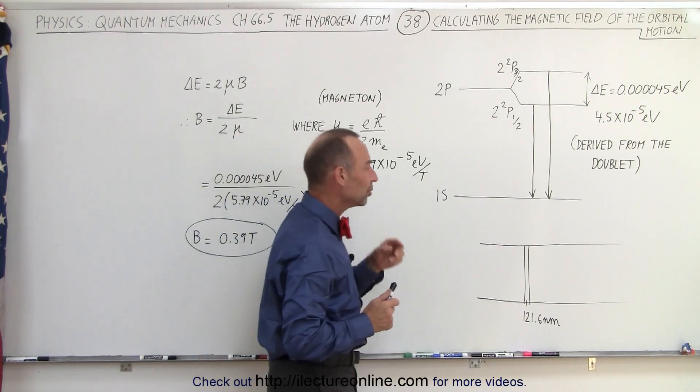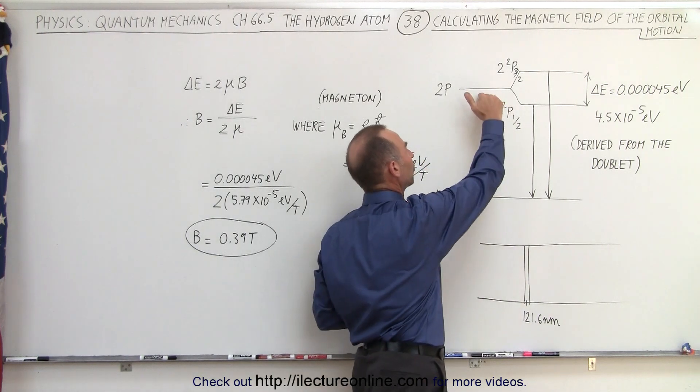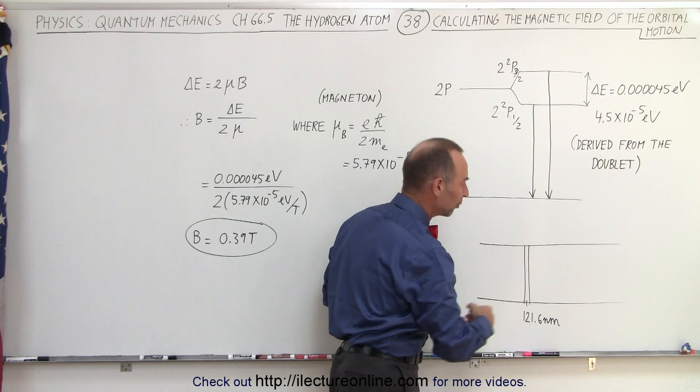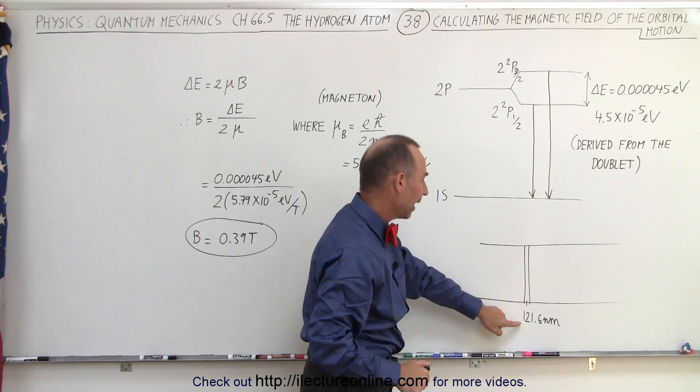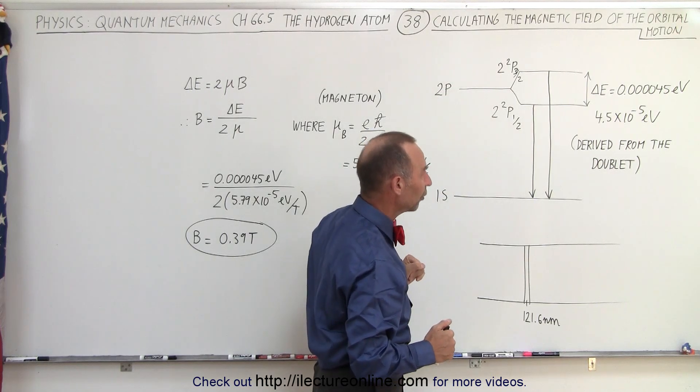So what they were able to do is realize that there is a double line, the line that we normally see from the transition from the second level down to the first level, which of course is in the ultraviolet radiation band at 121.6 nanometers for an energy difference of 10.2 electron volts.